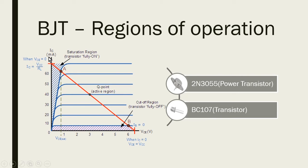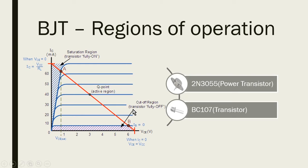Consider the VI characteristics of a BJT. Here we can see three regions of operation: saturation, active, and cutoff region. Cutoff means the transistor is in the off state — it is fully off, and this shaded portion represents your cutoff state.